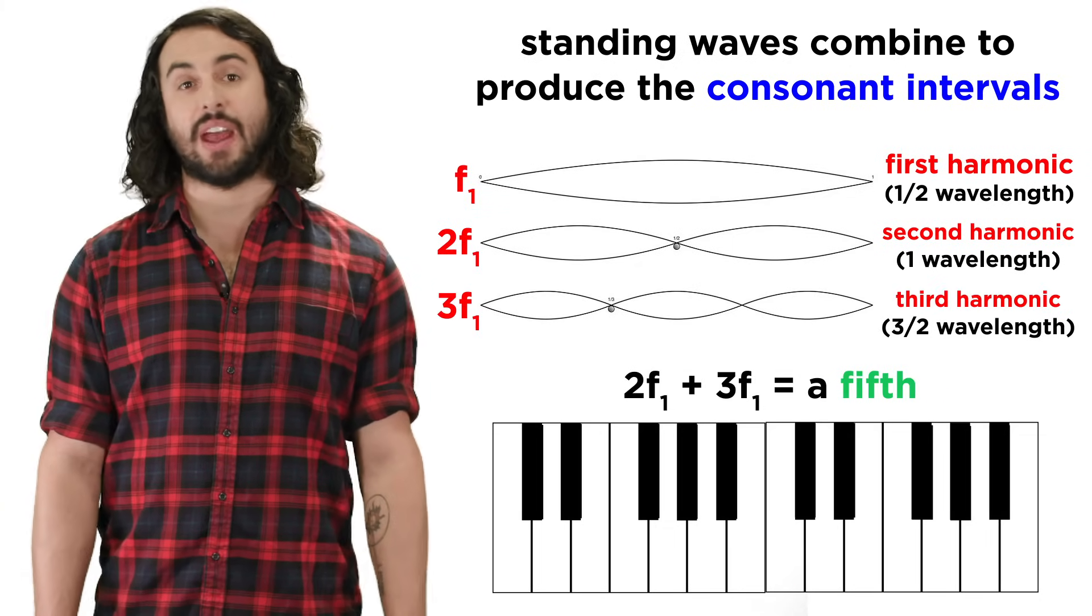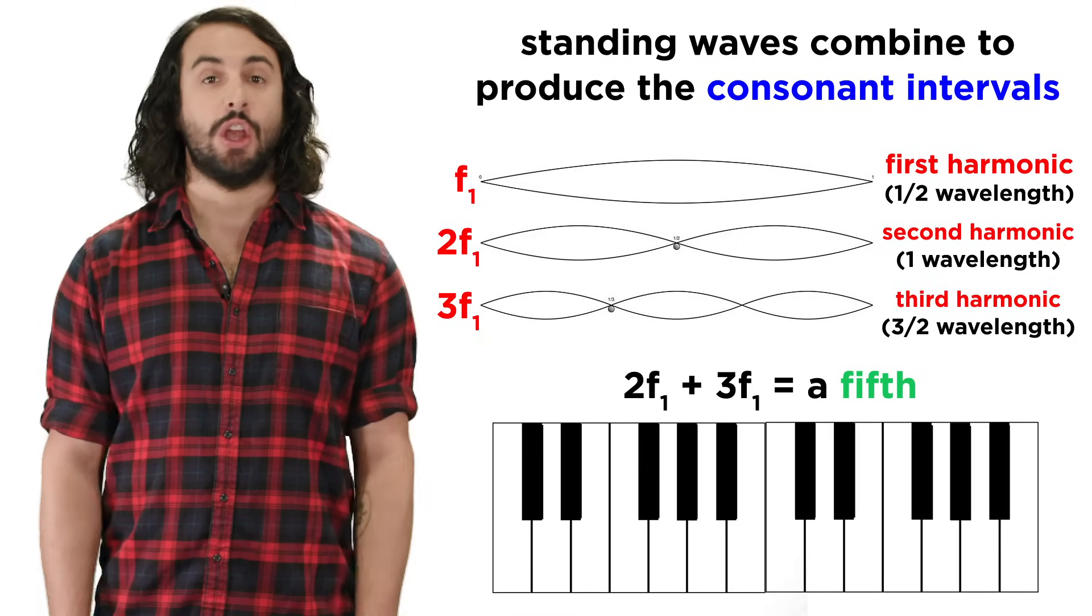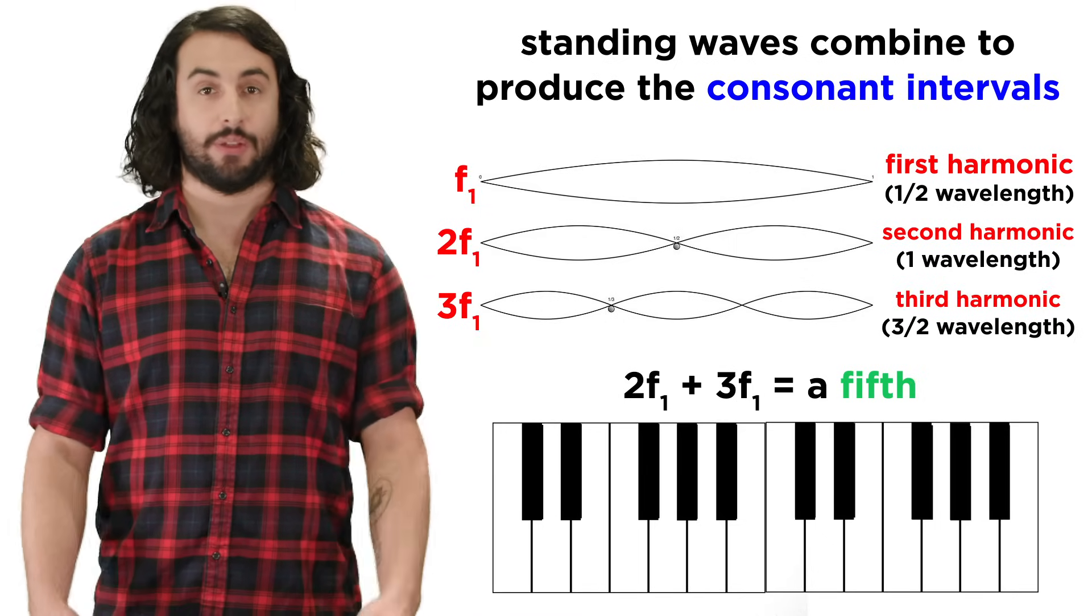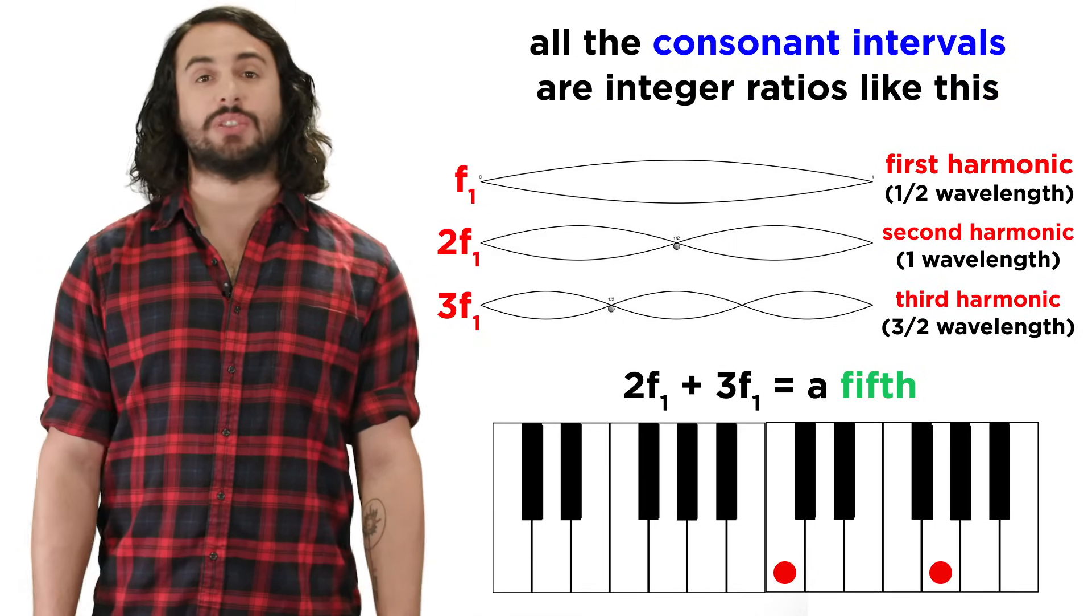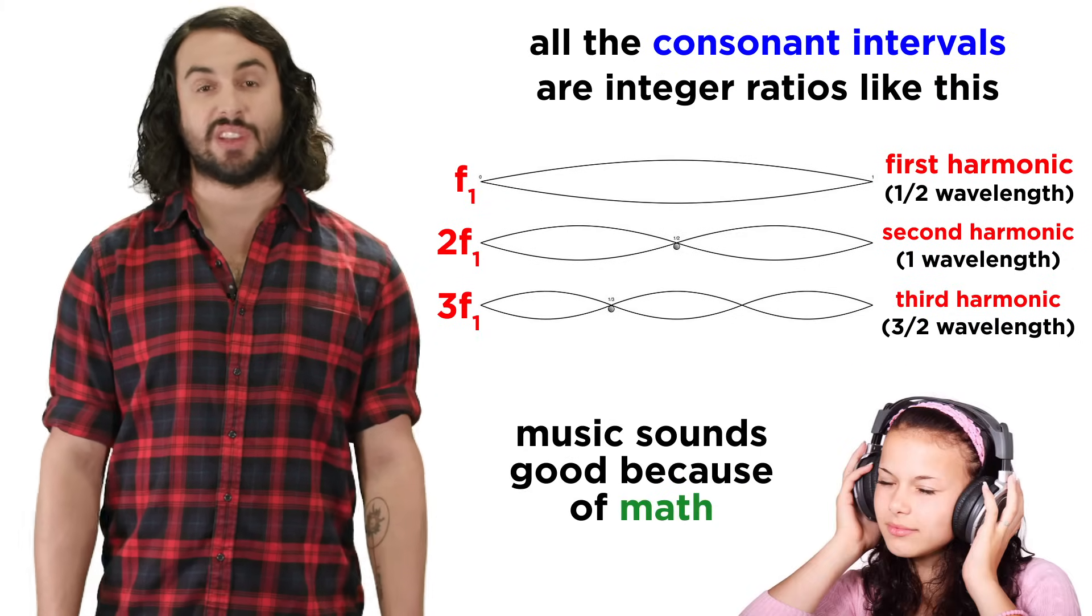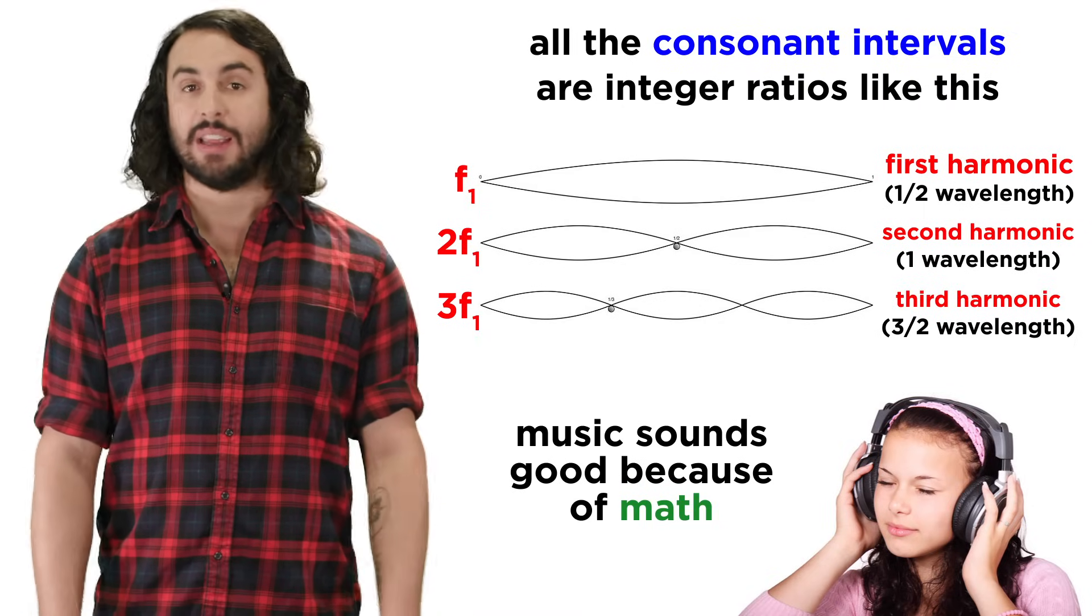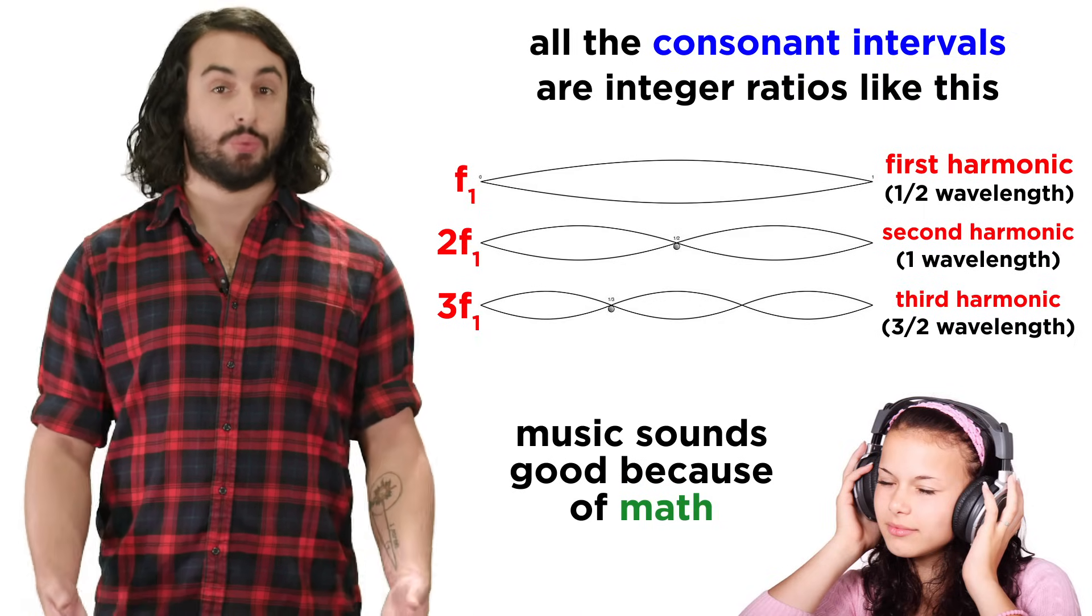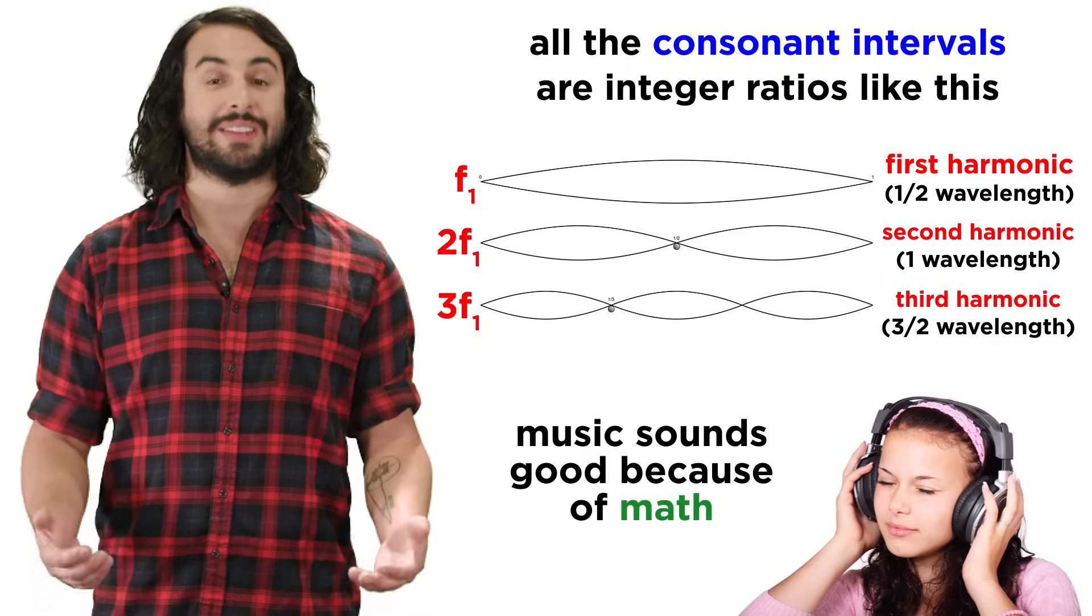Tripling the original frequency to 3F1 will give us the third harmonic, which in music is called a fifth. This will continue to give the rest of the consonant intervals. So the reason that certain combinations of notes sound pleasant is no random matter, it is rooted in the harmonics of standing waves.